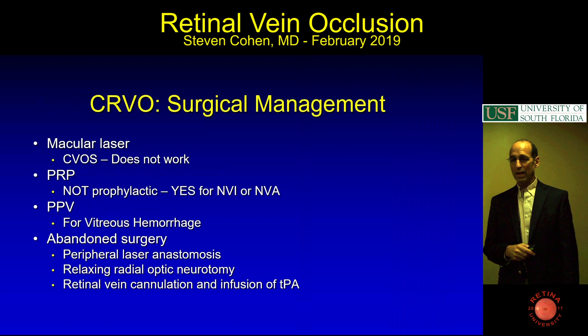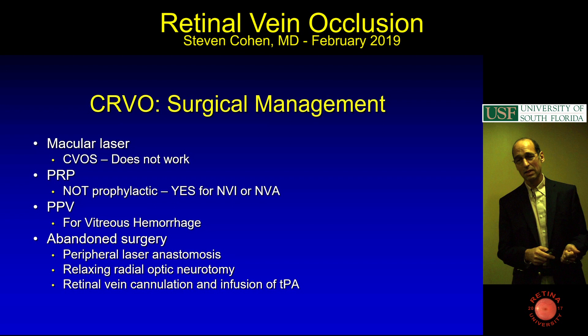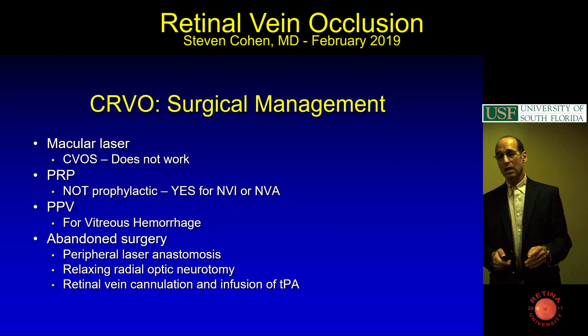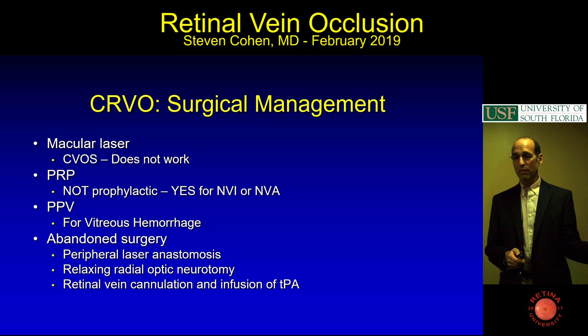For surgical management: macular laser does not work for central vein occlusion—it works for branch vein, not central vein. PRP is not prophylactic; you do it for rubeosis—if there's NVI or NVA, you do PRP. You don't do prophylactic PRP for non-perfusion alone. Vitrectomy is done for vitreous hemorrhage. Abandoned surgeries include peripheral laser anastomosis, radial optic neurotomy, and retinal vein cannulation with infusion of TPA.